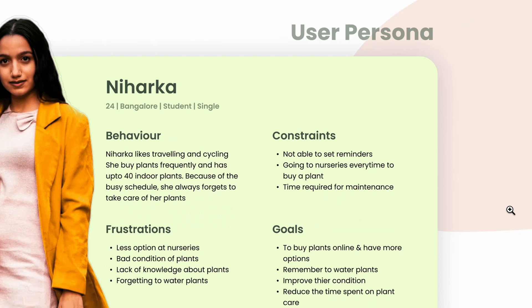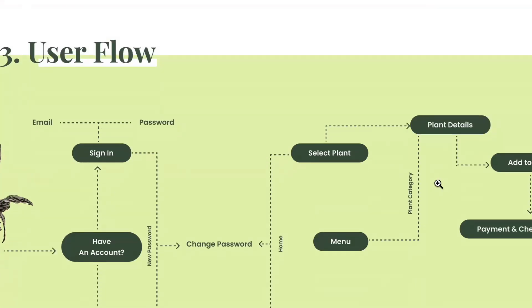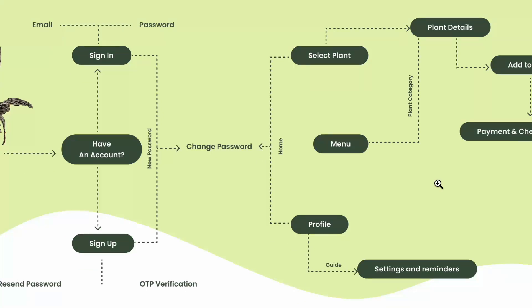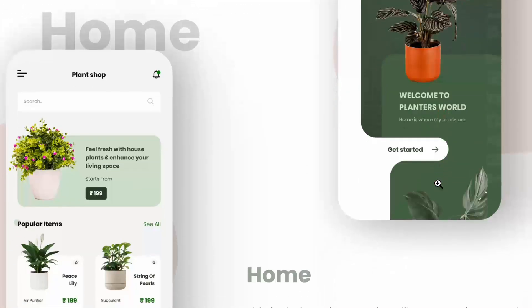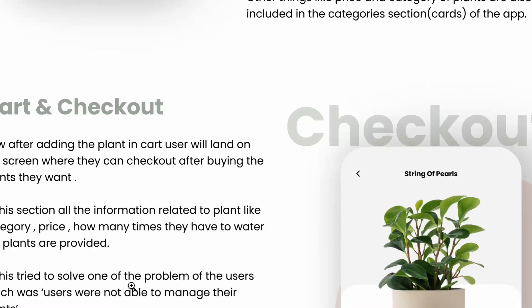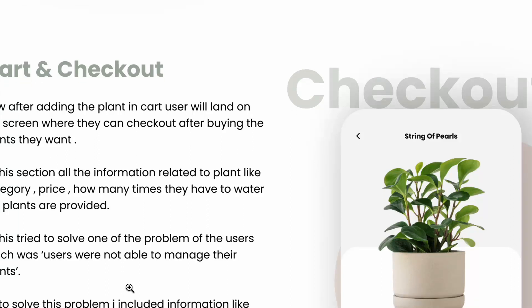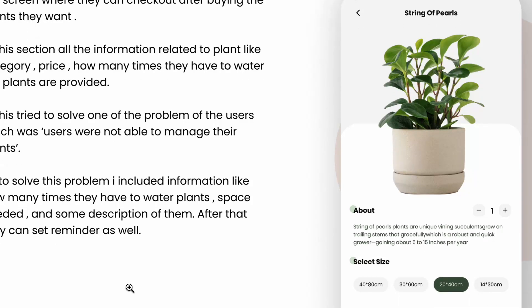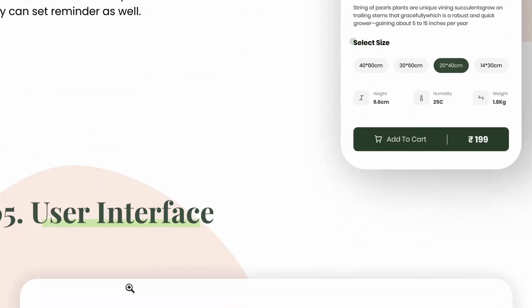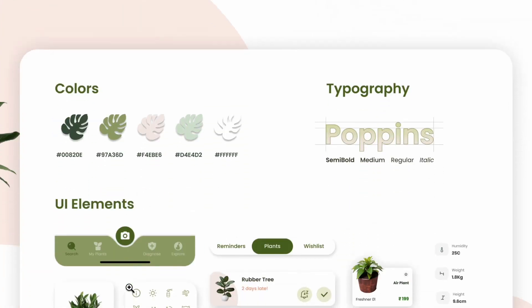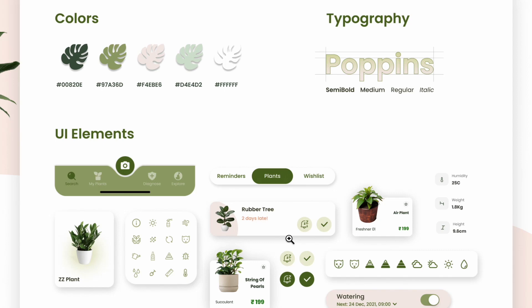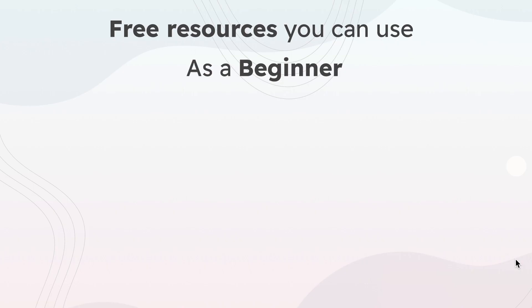User personas are specific to the particular project you are doing — they can be one, two, or three based on your target user base. This is the user flow, showing how the user navigates through the application from start to end. These are the wireframes and here are the UI screens. Explain each UI screen, because when someone new is viewing your portfolio it can be confusing — adding side notes helps them understand the project. Here comes the style guide: colors, typefaces, and UI elements.